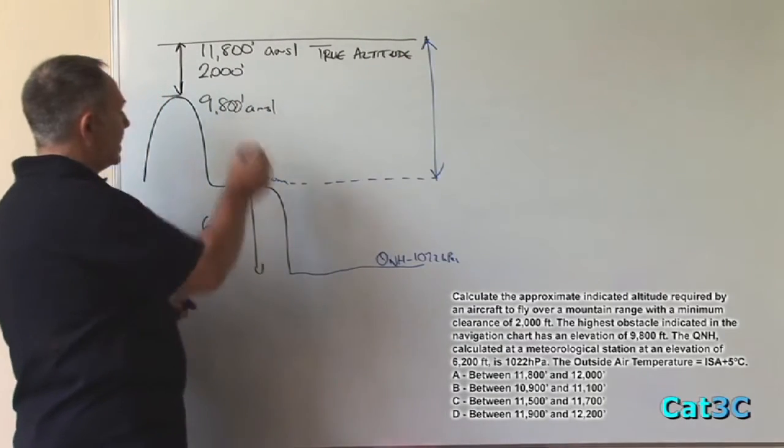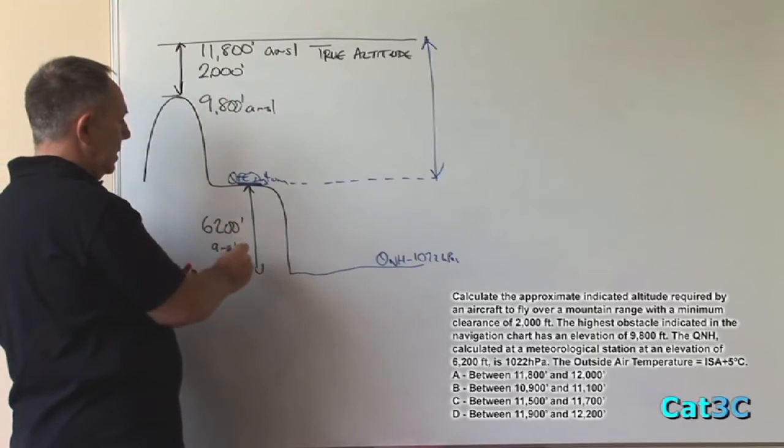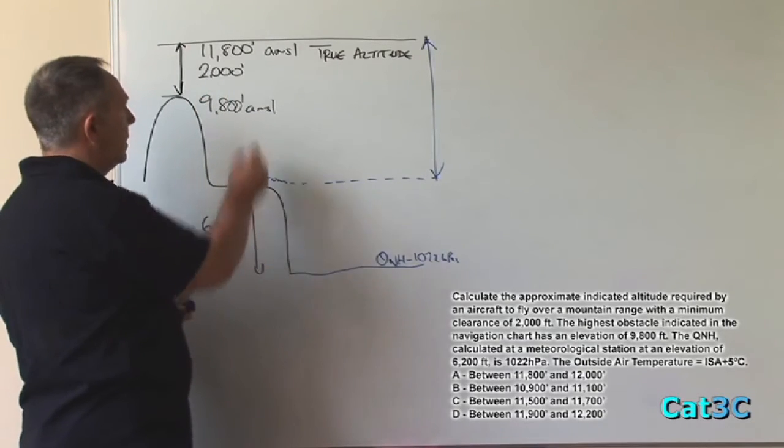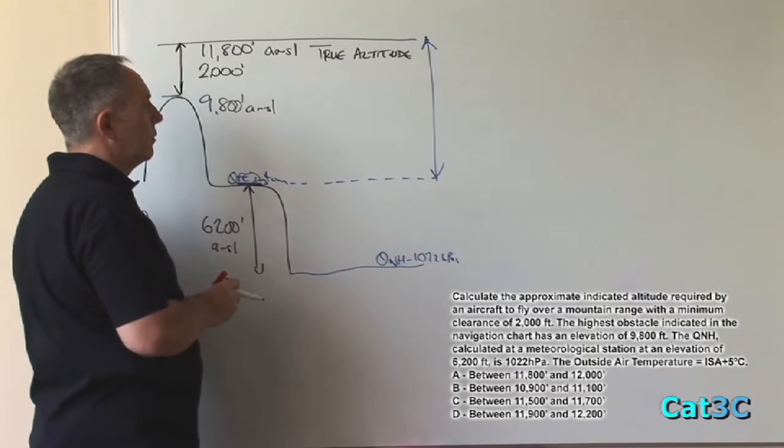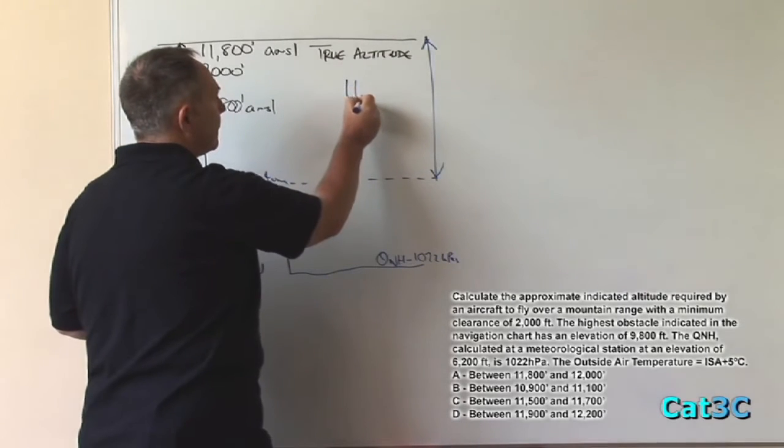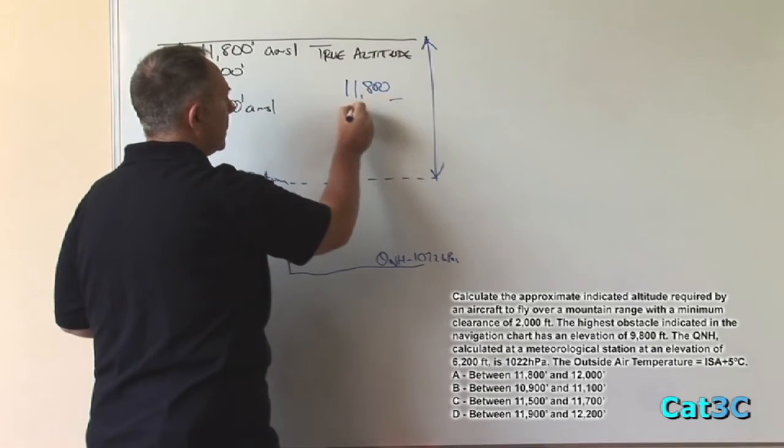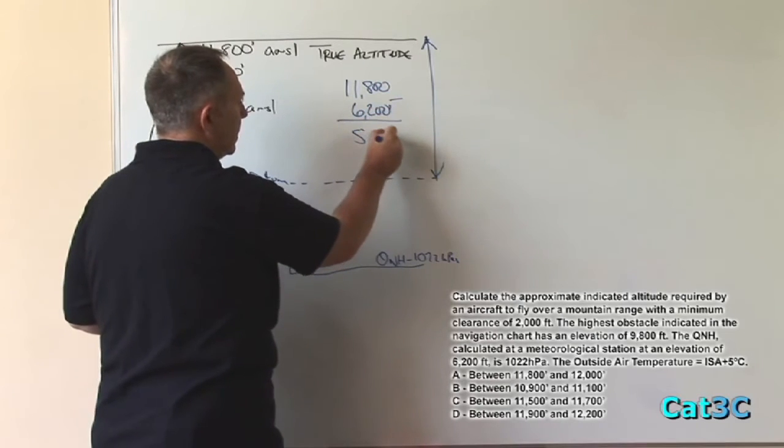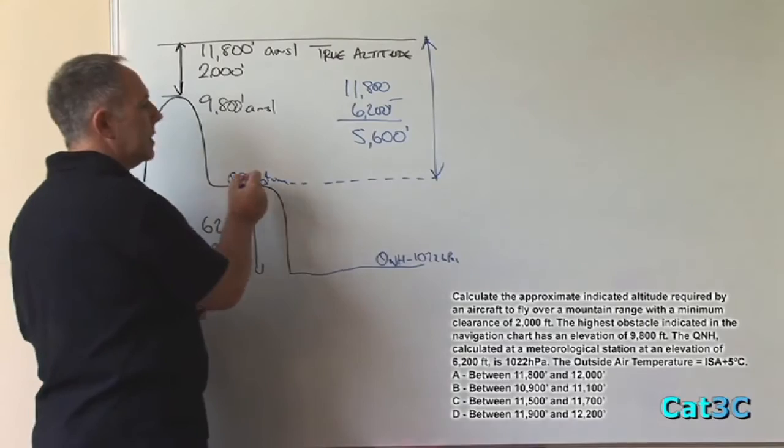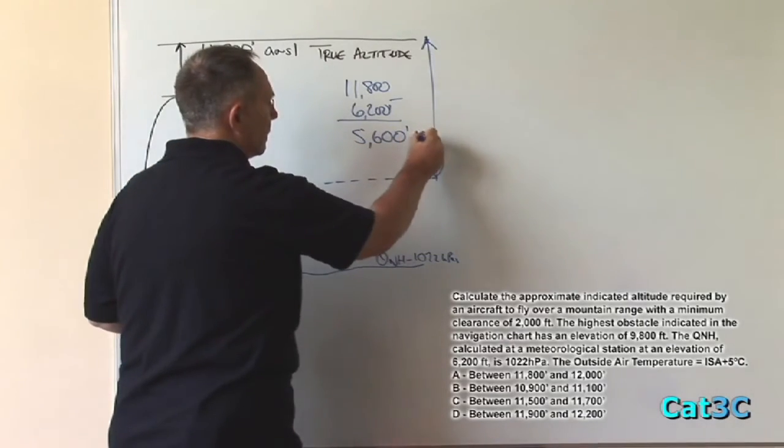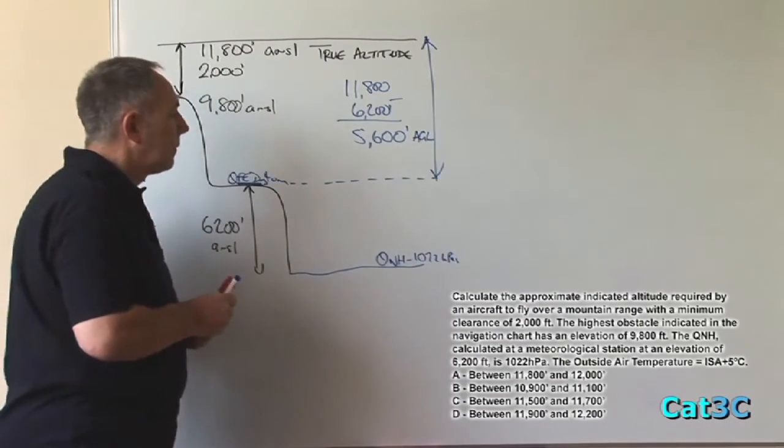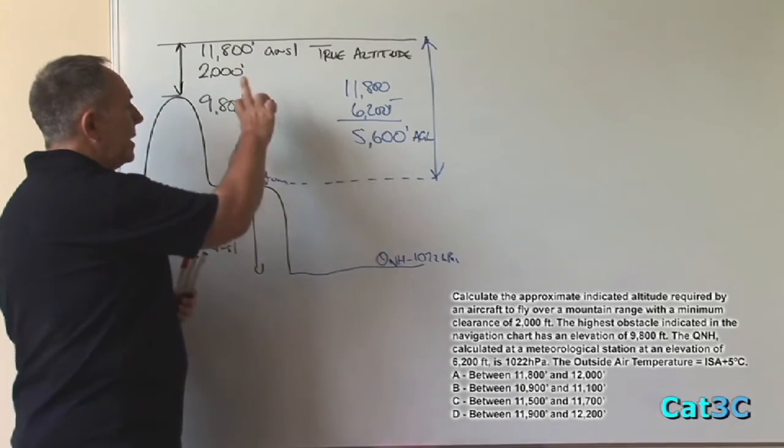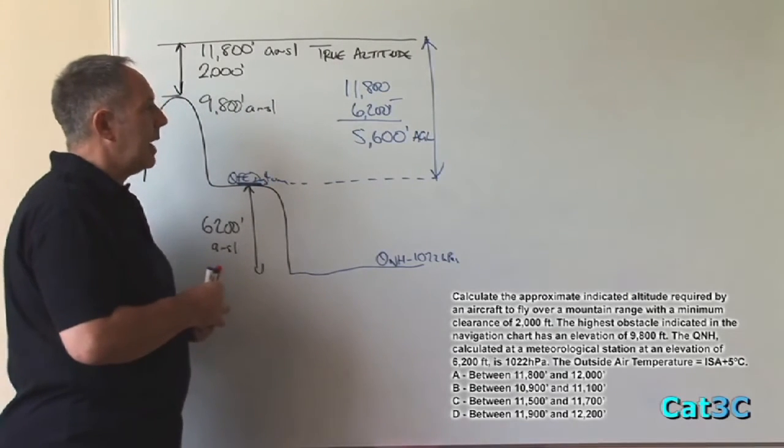To find that, we simply subtract 6,200 feet from 11,800 feet. So the aircraft will actually be 5,600 feet above ground level. Within that region, we find the temperature error correction.